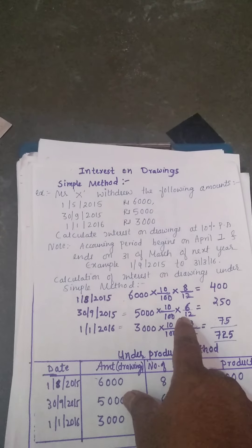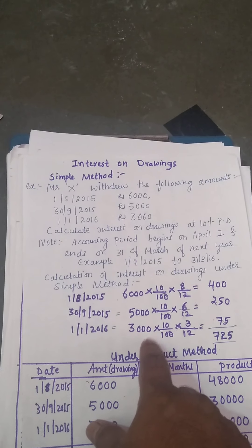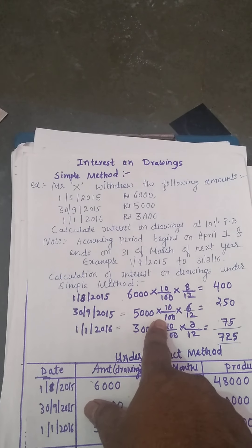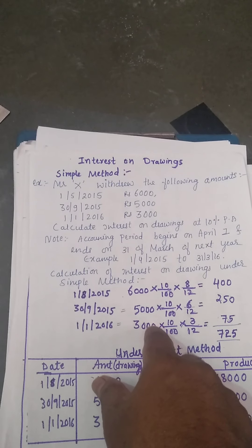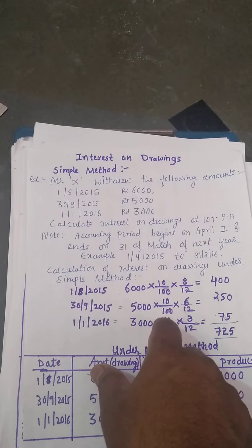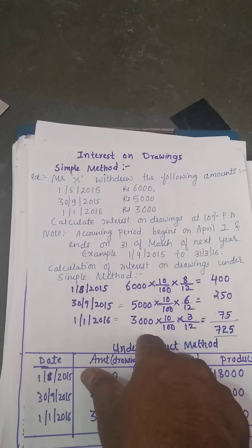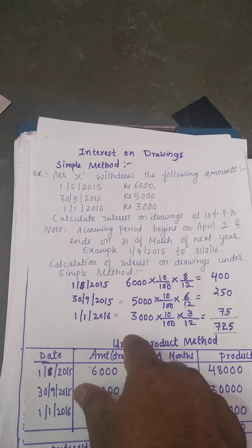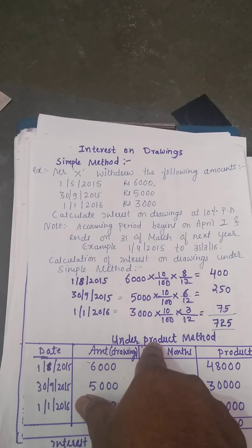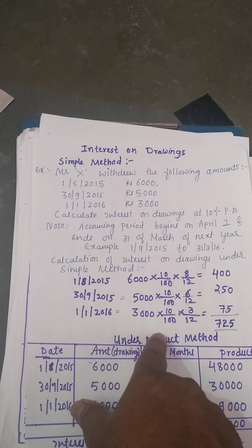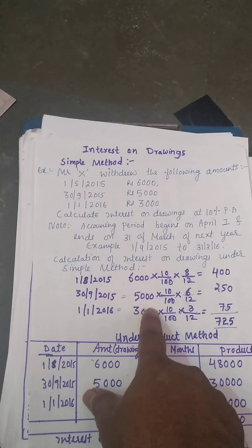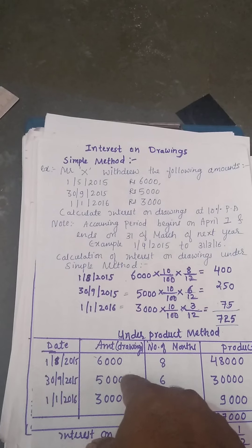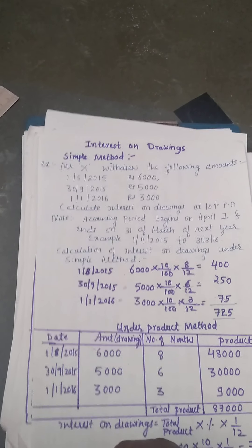If you solve the same problem under the product method, you will find it easier than the simple method, because in the simple method you have to calculate separately for each withdrawal. If the number of partners is more and the frequency of drawings is higher, the simple method becomes difficult. So a new method called the product method has been introduced, where calculation of interest on drawings is much easier. Let us see the same problem solved under the product method.